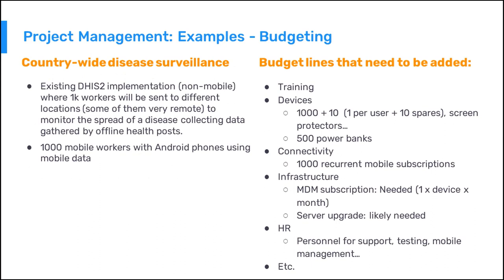In the second scenario, a thousand workers are collecting data in a remote area with difficulties having an internet connection, which means mobile data is a must for synchronization. The budget increases due to training — with such a large number of users, training of trainers will be needed — a large amount of devices including at least 1,010 devices with power banks and accessories for rough environments, mobile subscriptions so users in the field can synchronize, an MDM due to the large number of devices, server upgrade to support the amount of data to collect, and personnel for testing and user support.